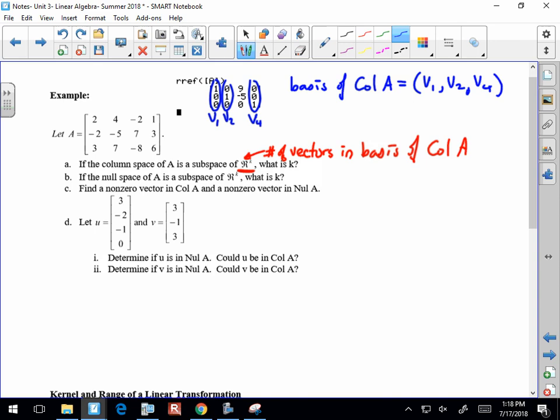All right, so the number of vectors in the subspace of R to the K, and so K is going to be three. This is also known as the rank of the matrix. All right, so the number of elements that make up the basis of the column space is also known as the rank.